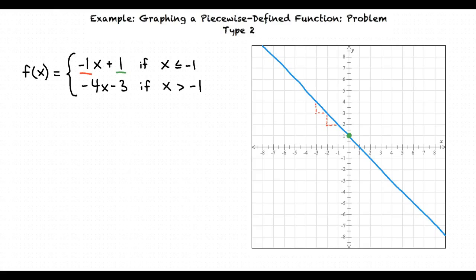Now we must erase the portion to the right of the point negative 1, 2, because we are only asked to graph negative x plus 1 if x is less than or equal to negative 1. Finally, we place a closed circle here because x is less than or equal to negative 1.